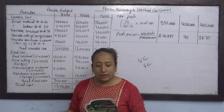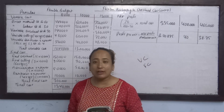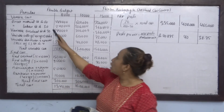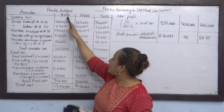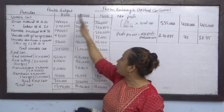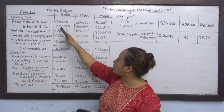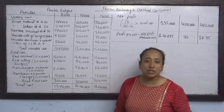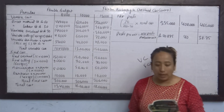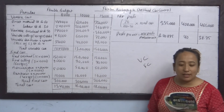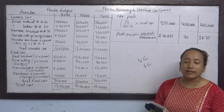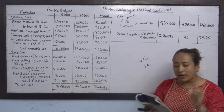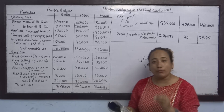Direct labour is called at 30 per unit. So 30 into 8,000, 30 into 10,000 — it is very simple. Direct labour is a variable cost, and similarly we calculate other variable overhead options.